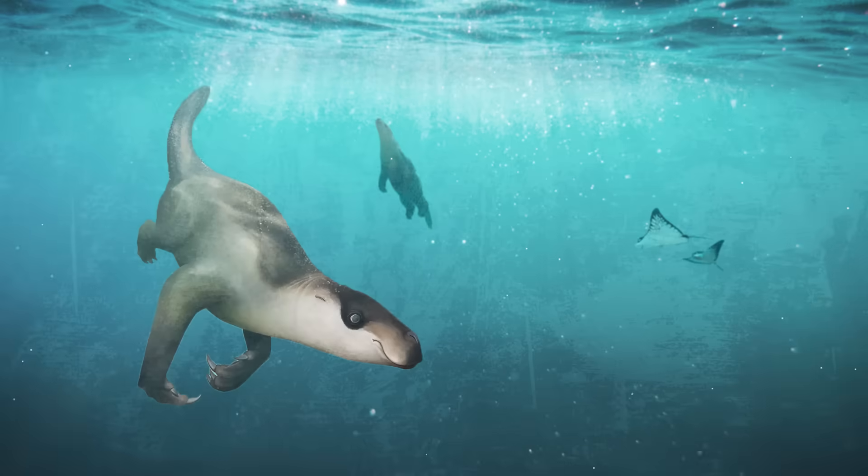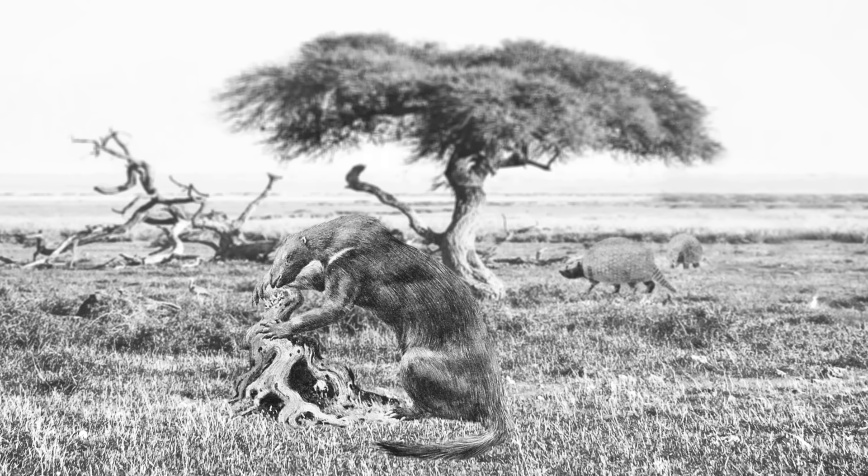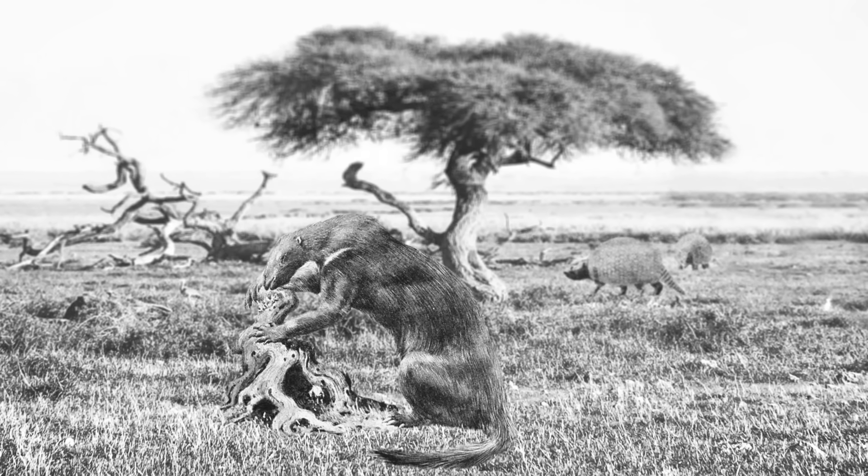So sloths have inhabited caves, dived in the seas, lived on the ground, and climbed up in the trees. And with their super-low metabolism, they were able to find nutrients where others couldn't. But this brings us to perhaps the weirdest part of the whole story of sloth evolution—the sloths that survived to the modern day.